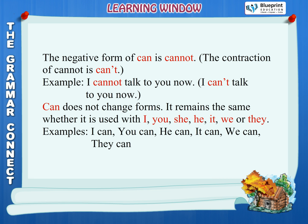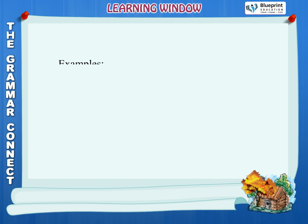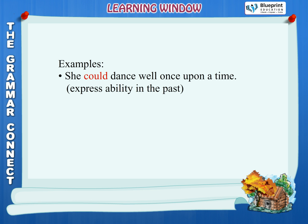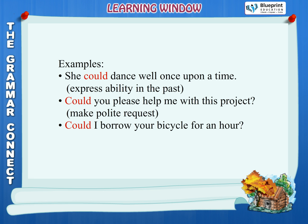We can, they can. Could is used to express ability in the past, to make polite requests and to ask for permission politely. Examples: She could dance well once upon a time — expressing ability in the past. Could you please help me with this project? — making a polite request. Could I borrow your bicycle for an hour? — asking for permission politely.